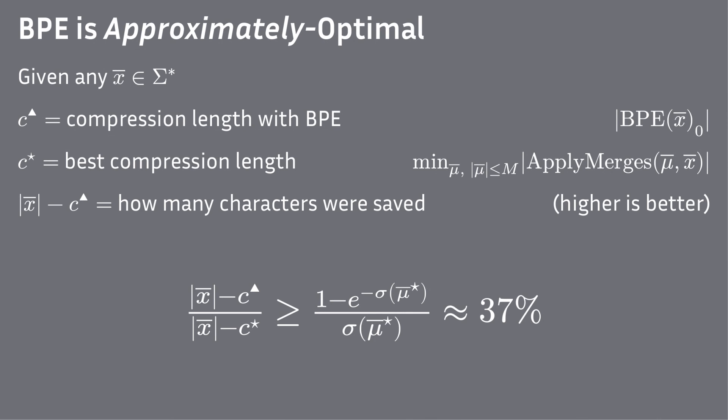From our experiments, human languages have nice, human properties, and the merge sequence found by greedy BPE is roughly 99% as good as optimal BPE. You can read more about this in our paper 'A Perspective on Byte-Pair Encoding'.